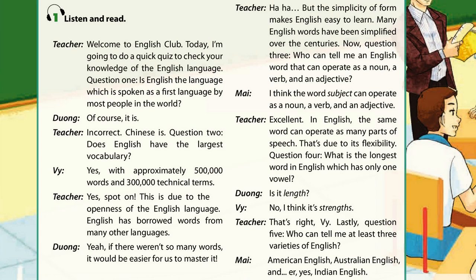This is due to the openness of the English language. English has borrowed words from many other languages. If there weren't so many words, it would be easier for us to master it. But the simplicity of form makes English easy to learn. Many English words have been simplified over the centuries.